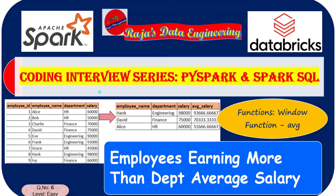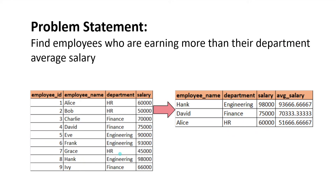In my previous video, I solved the coding exercise where employees are earning more than their managers. Coming to this problem statement, we have to find the list of employees who are earning more than their department average salary. This looks quite similar to the previous one, but the logic is completely different. Let us understand the problem statement first.